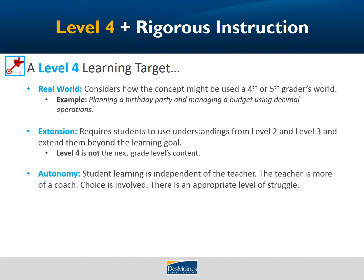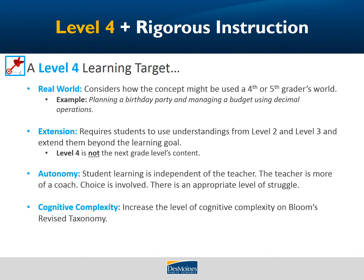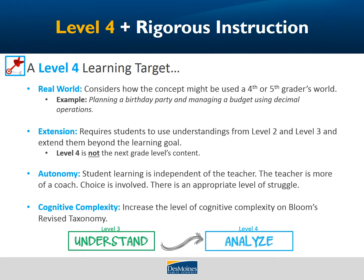The fourth component is cognitive complexity — increasing that level of cognitive complexity on Bloom's taxonomy, or whatever taxonomy you might use at your school, to increase that level of rigor. So for example, if my goal was in the 'understand' level on Bloom's taxonomy, my level 4 might be to analyze. And we're going to see what this looks like in practice.